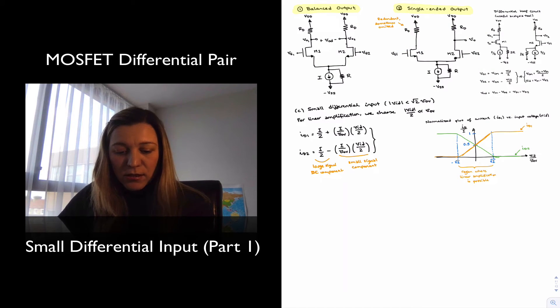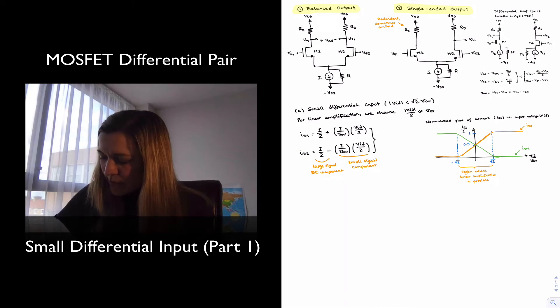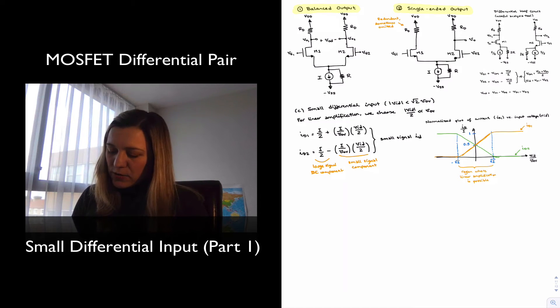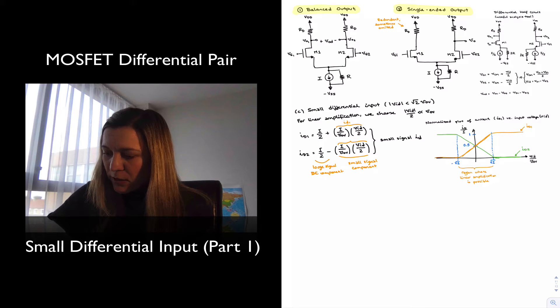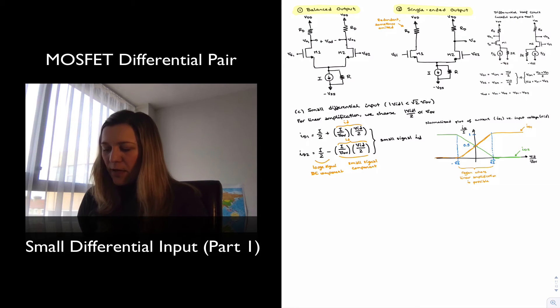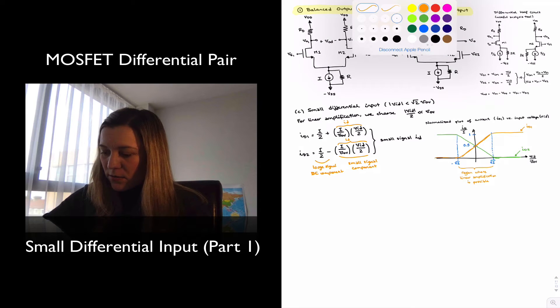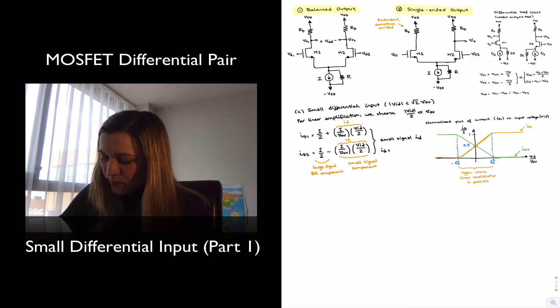Therefore, I can rewrite those expressions as follows. My small signal ID, we can call this ID1 and ID2. So we can say, this is I halves plus little ID1. And this is I halves minus little ID2. They're both equal to each other in magnitude. And so it is going to call it little ID. And that's my small signal, little ID, which is equal to, as we have seen, I over VoV times VID over 2.